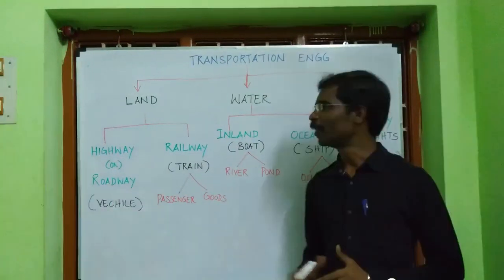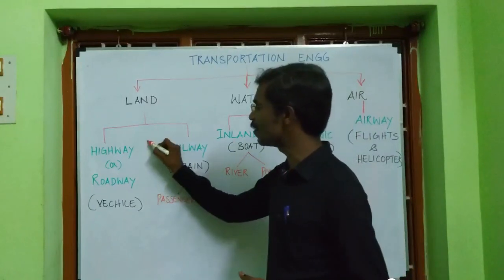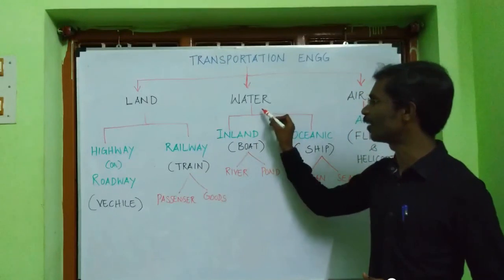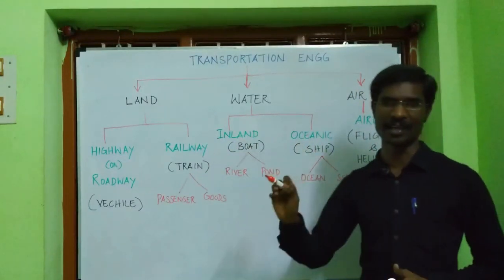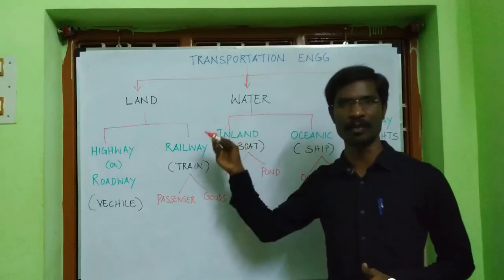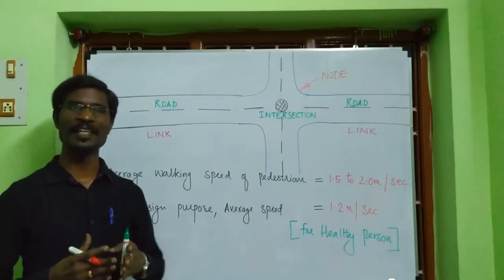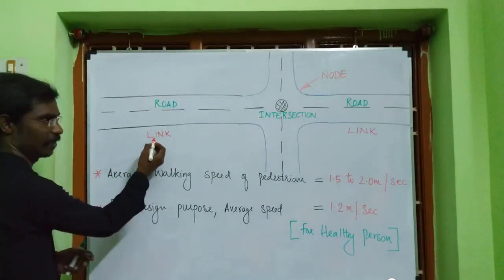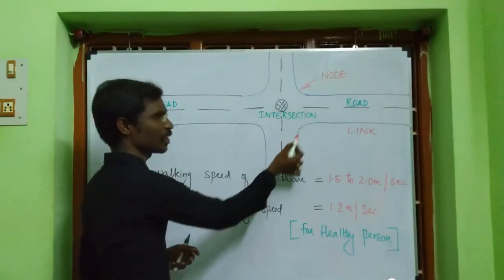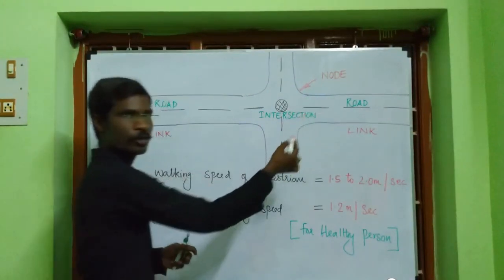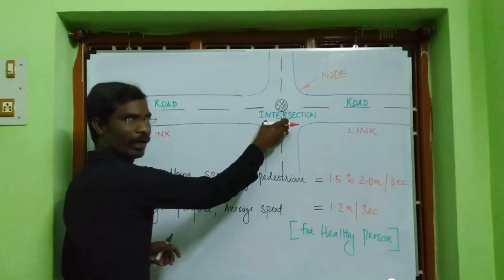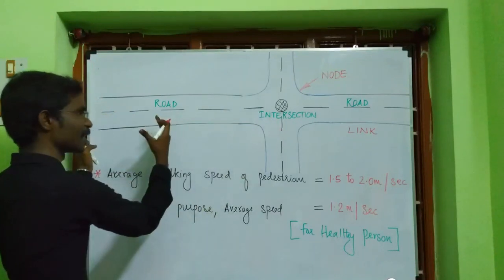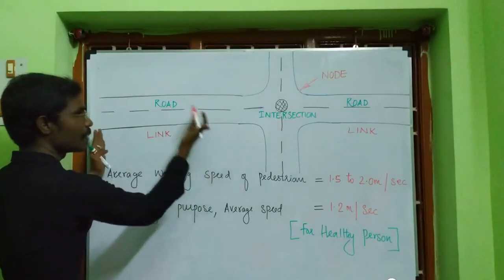We are going to discuss only highway engineering or roadway engineering, not water, railway, or airway engineering — those will be covered in future videos. In transportation engineering, roads are usually called links, and intersections are called nodes. A node is an intersection point; a link is the road between one node and another.